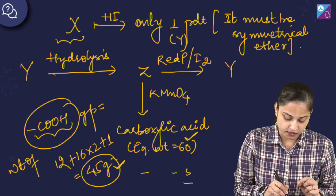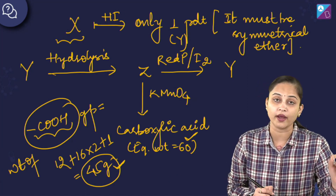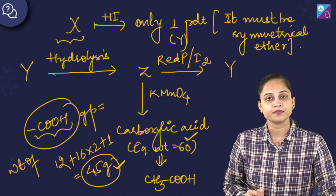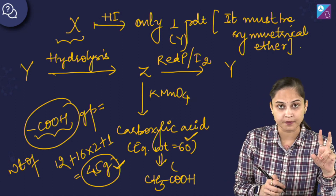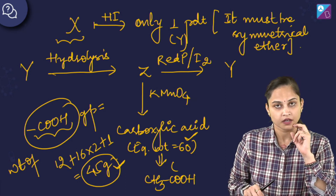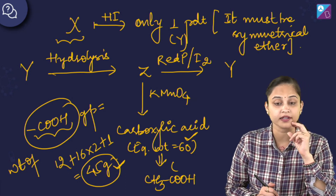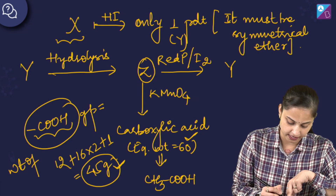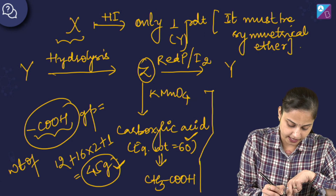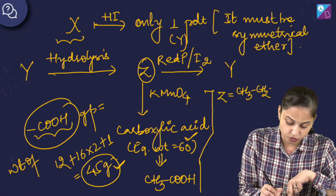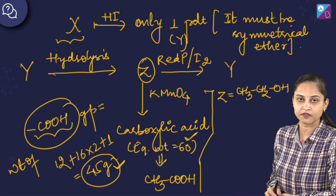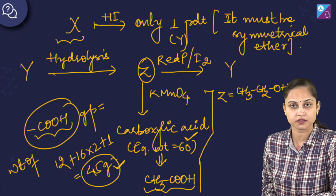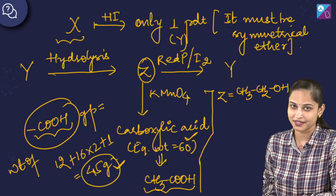So the carboxylic acid can only have a CH3 unit attached to the COOH group, making it CH3COOH — acetic acid. This is the oxidized product of Z. Therefore, if we are getting CH3COOH from oxidation of Z, we can say Z is CH3CH2OH (ethanol), because ethanol on oxidation with KMnO4 gives acetic acid whose equivalent weight is 60.